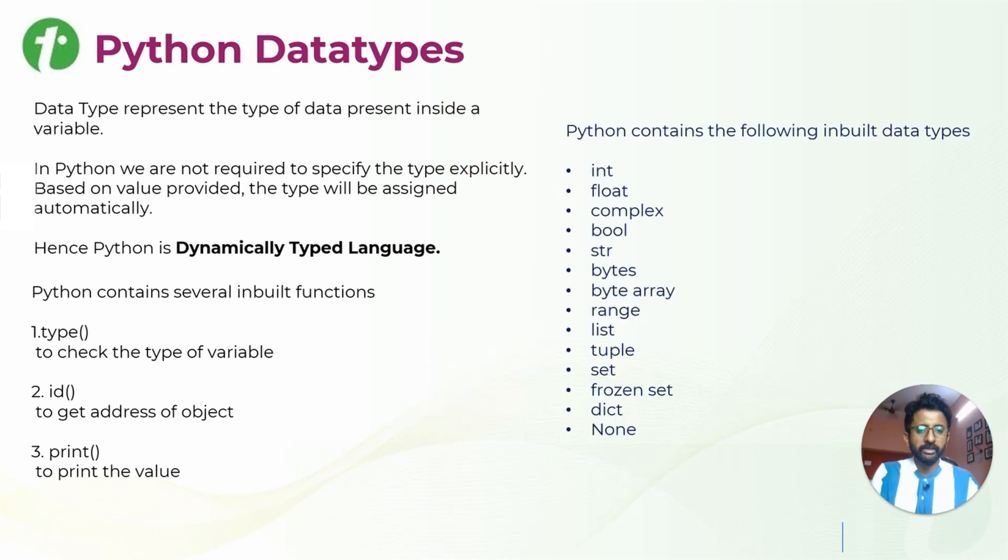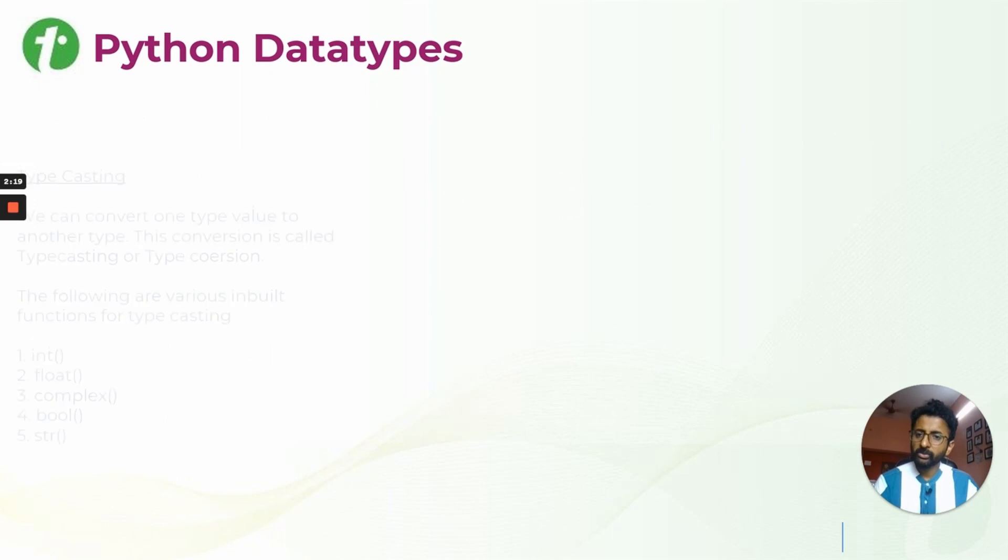There are different inbuilt data types in Python like integer, complex, float, boolean, and so on until list, tuple, set, dictionaries, and even none. We will see all those in Jupyter Notebook.